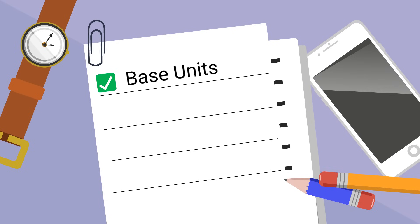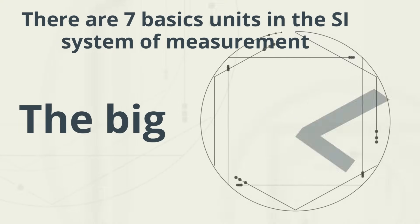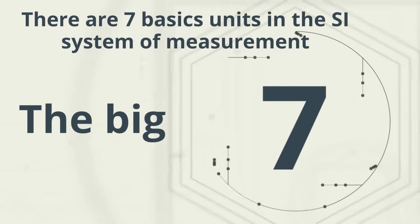The seven base units, the derived units, and then the accepted units. Up first, the seven base units. I call them the big seven because the SI system is built around these units.